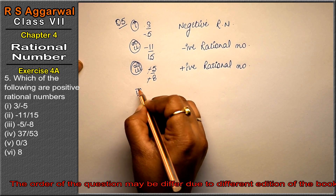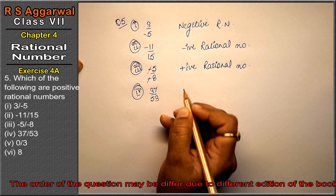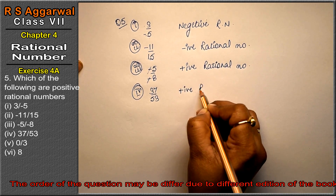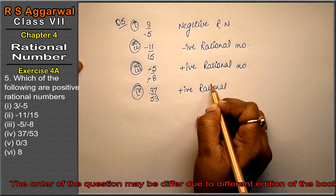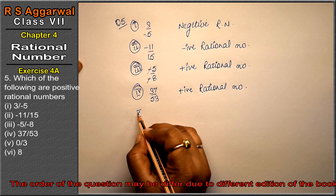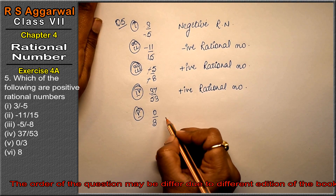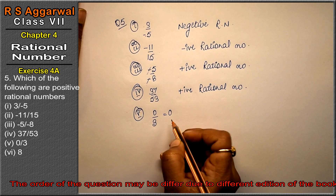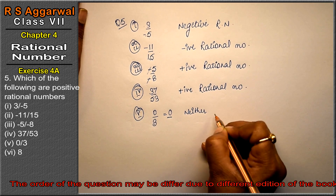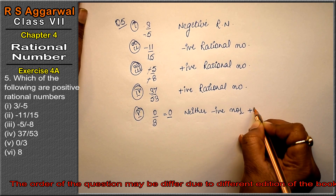Fourth part is 37 upon 53. Friends, both signs are positive, so it is a positive rational number. Fifth part is 0 upon 3. If we simplify 0 upon 3, the answer is 0, and 0 is neither negative nor positive — it is not a positive rational number.